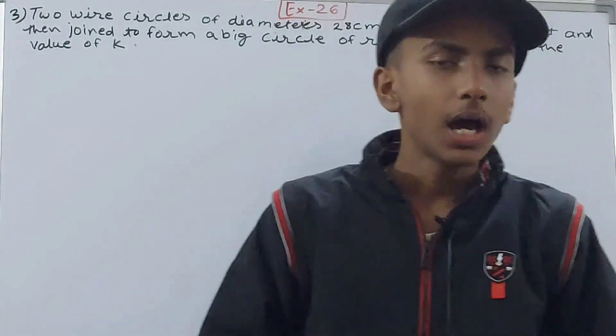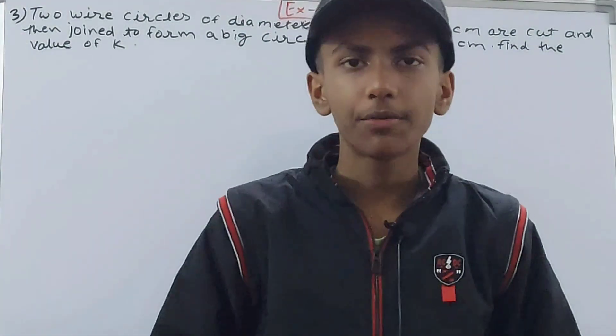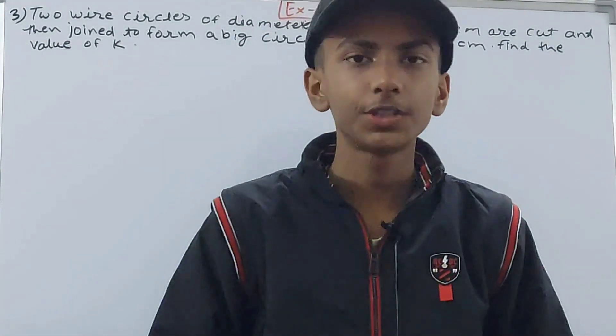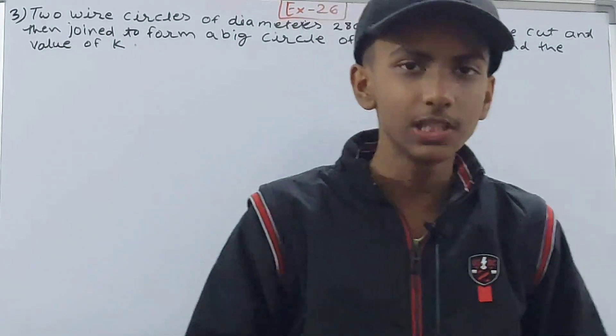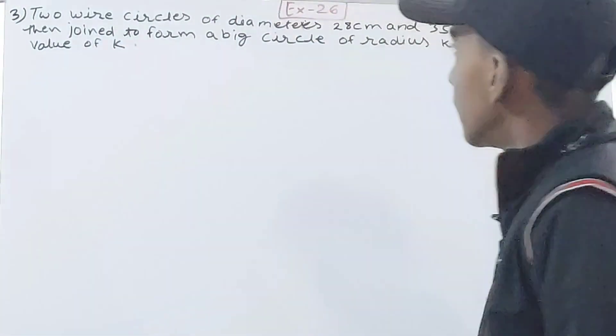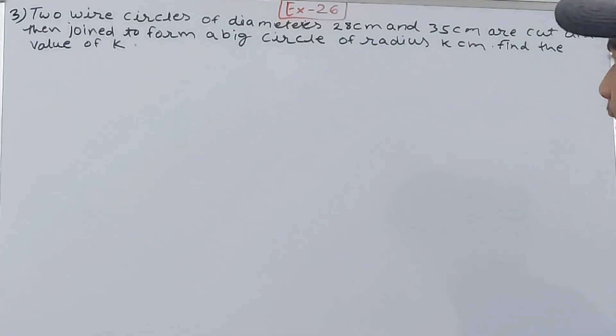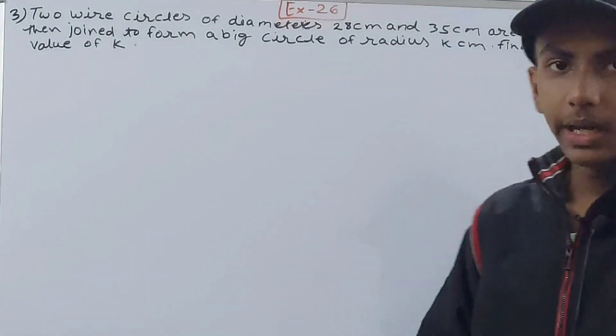In this video we are going to solve ICSE Mathematics Class 8, Chapter 26, Circumference and Area of a Circle, Exercise 26, Question 3. Here it is: two wire circles of diameters 28 centimeters and 35 centimeters are cut and then joined to form a big circle of radius k centimeters. Find the value of k.